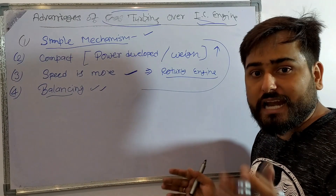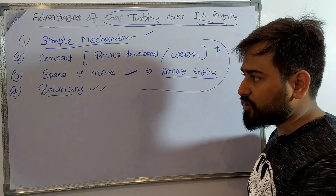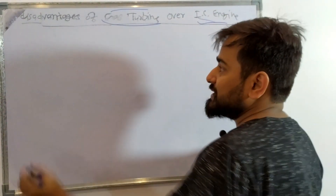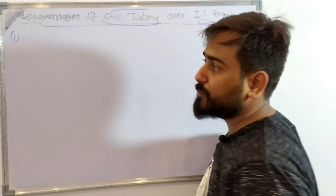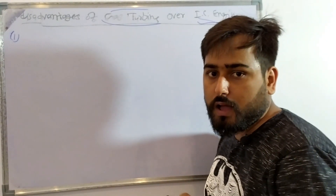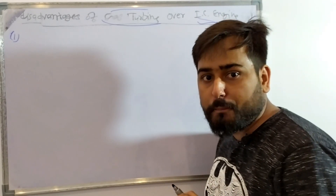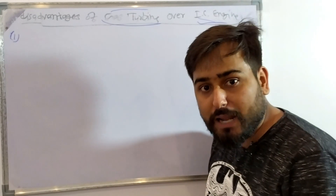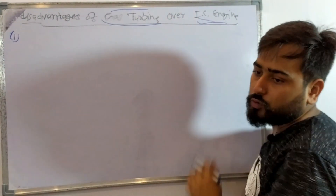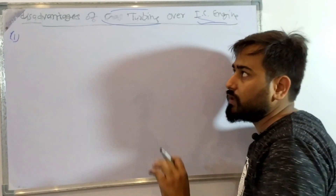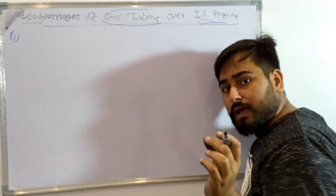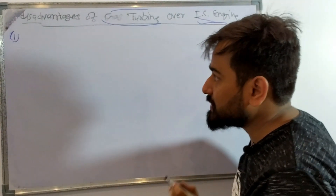Now there are some disadvantages of Gas Turbine. The first and very important disadvantage — which is often asked in interviews — is that in Gas Turbine there is a compressor. If you have studied compressors in RAC, you know that we have to give work input to the compressor. The IC engine does not use a compressor in this way. The compressor requires work input, while in a liquid system the pump does very little work.